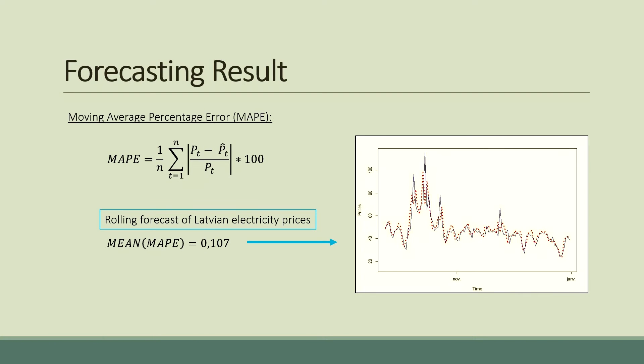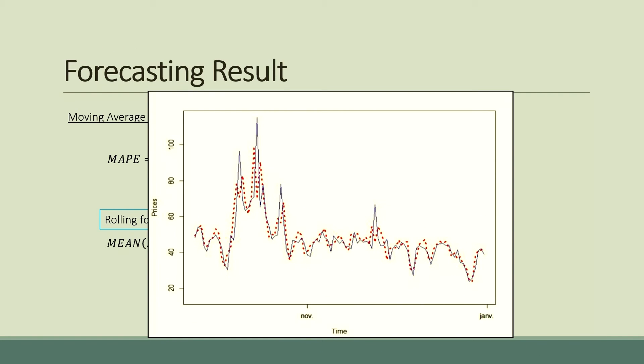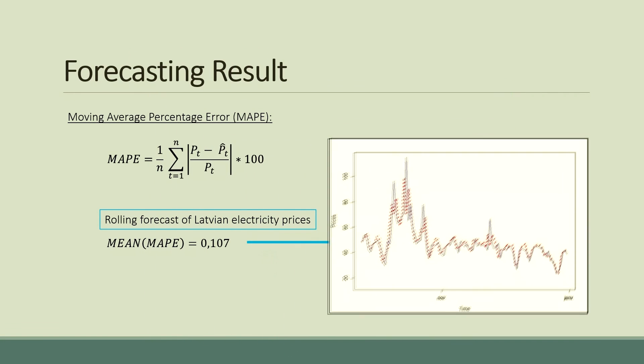Finally, we can have an idea of the accuracy of our methodology by computing the moving average percentage error. As you can see on this graph, we have obtained fairly accurate estimation using a rolling forecast over the last 100 days of 2015 for the Latvian electricity market.